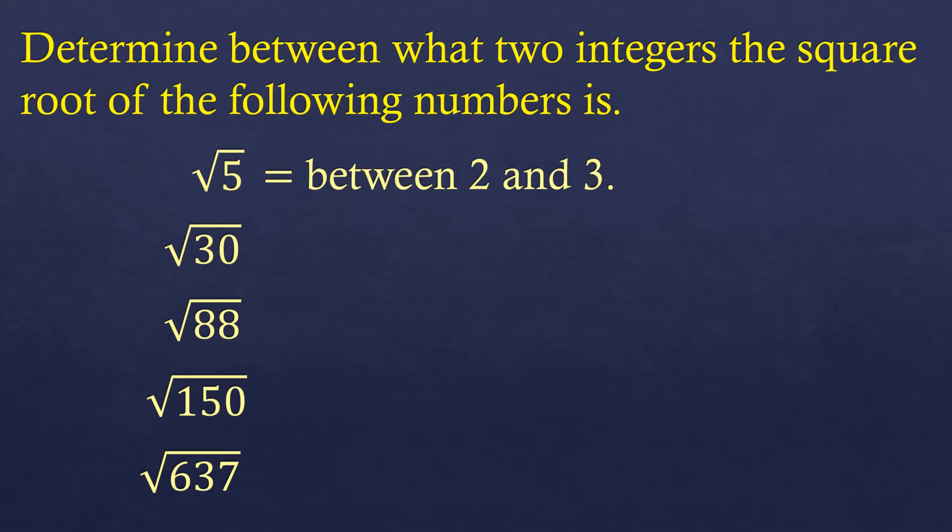Next for square root of 30, we're going to look for a number less than 30 where when you take the root, we can get an integer root. The closest which is smaller than 30 is 25, because square root of 25 is 5. That means the root for square root of 30 is in between 5 and 6.